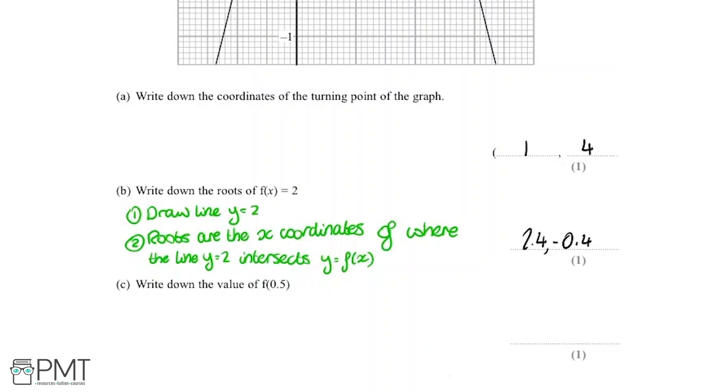Last but not least, part c says we need to write down the value of f(0.5). Here are the two steps we're going to use for this question. Firstly, we're going to draw the line x equals 0.5, because we need to find the value of f(0.5).